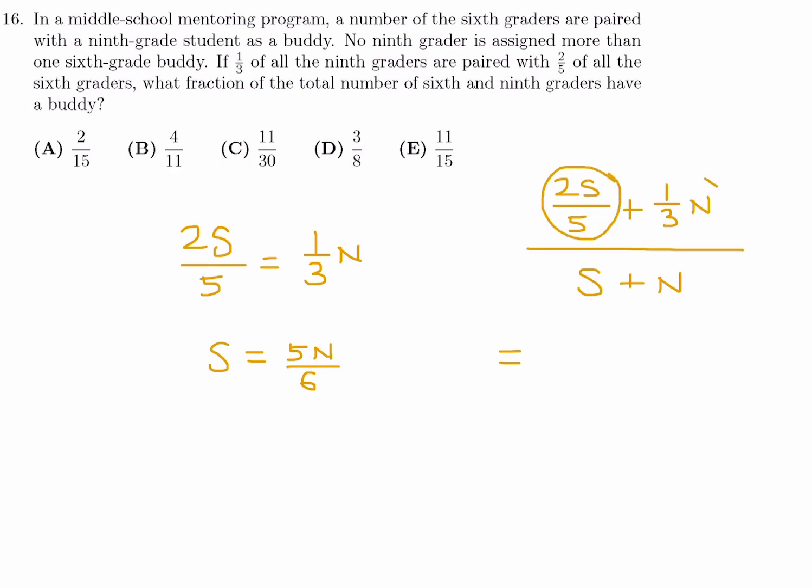So this is the fraction. Well, this is equivalent to that. So instead of putting 2S over 5, I can just put 1/3 N, and then the 1/3 N. And then the S is 5N over 6. So there we go. Now I've got it all in terms of one variable. And since that one variable appears everywhere, it can just cancel out. So adding the fraction, this becomes 2 over 3 over, if you get a common denominator and add, it'll be 11 over 6. So now invert and multiply, and you will get 2 over 3 times 6 over 11. And that is 12 over 33. And if you divide top and bottom by 3, you'll get 4 over 11. So number 16, the answer is B.